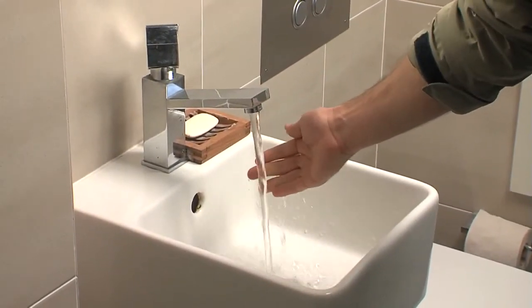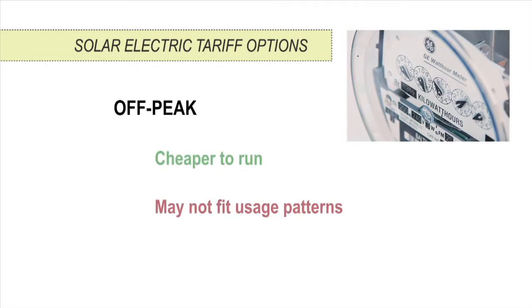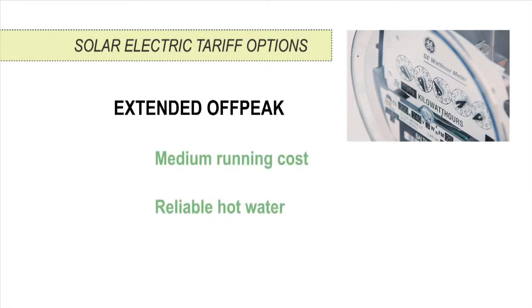When advising the householder on their energy tariff options explain the pros and cons of each option. A regular tariff allows boosting at any time, but it won't lead to a reduction in their bills if their previous system was electric off-peak. Off-peak will be cheaper but may not fit the hot water usage patterns of all households. If available, extended off-peak or off-peak 2 is often a good compromise.